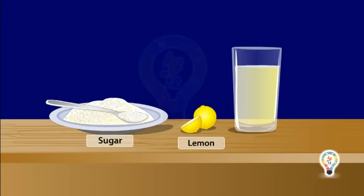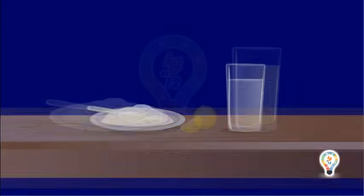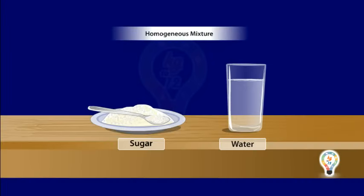A mixture refers to the physical combination of two or more substances. Different types of mixtures. There are two types of mixtures.